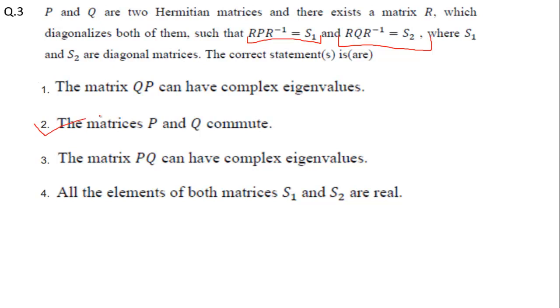If they commute, then the matrices P and Q commute. Also, all the elements of both matrices S_1 and S_2 are real. So option number two and four are correct. This was also an MSQ type question.